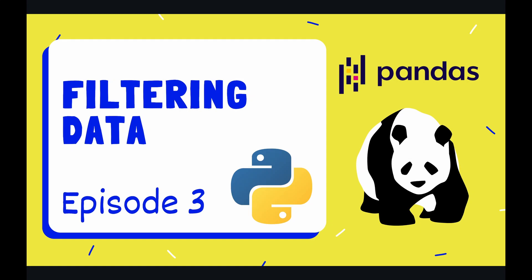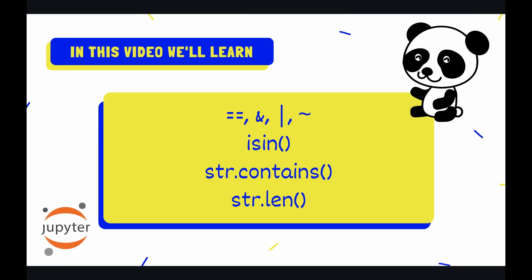Hey coders and welcome to episode 3 of our pandas playlist. We're going to be continuing our journey through the pandas package by learning how to filter our data. In this video we'll take a surface level view at all of the different filter methods and operators, covering basic operators such as the double equal sign, the ampersand, the pipe, and the tilde, and methods such as isin, str.contains, and str.len.